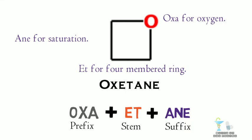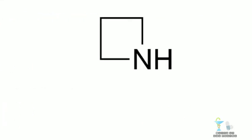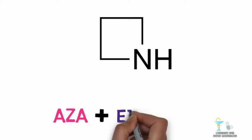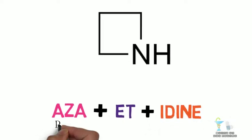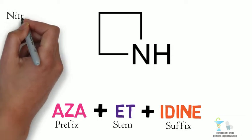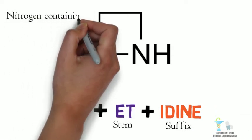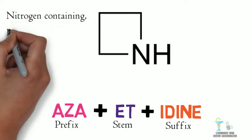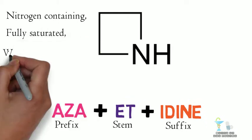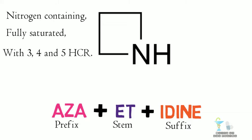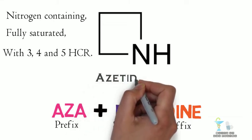The next example is AZA for nitrogen atom, ET for four-membered ring. Look carefully, the suffix here is IDINE. Because of a special rule, IDINE is used for only nitrogen containing fully saturated with three, four and five membered rings. AZA plus ET plus IDINE. Finally AZETIDINE.